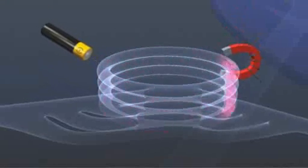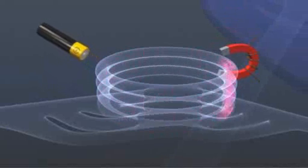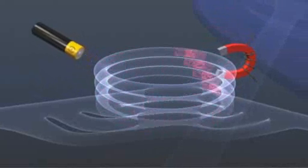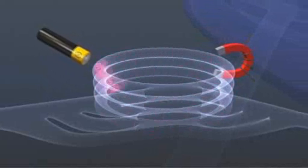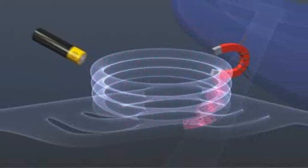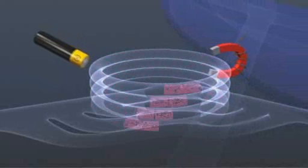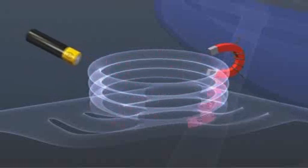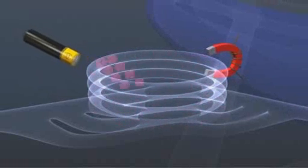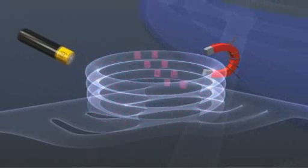Magnets exert a force on the passing protons at right angles to their direction of motion, and so powerful electromagnets are used to bend the beam of protons round the circle. The booster accelerates the protons up to 91.6% of the speed of light and squeezes them closer together.